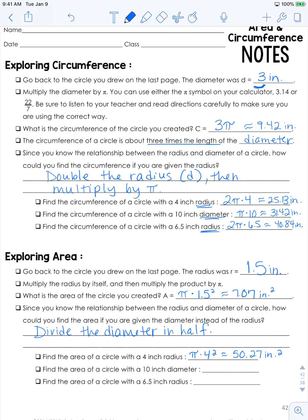The area of a circle with a 5 inch radius is going to be π times 5 squared. The area of a circle with a 6.5 inch radius is going to be π times 6.5 squared, and that is going to be 132.73 inches squared.